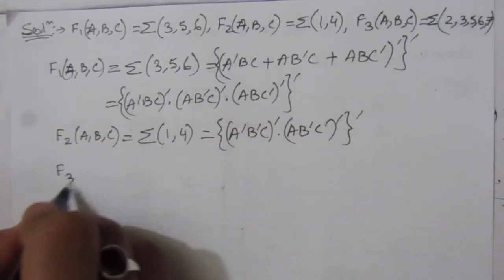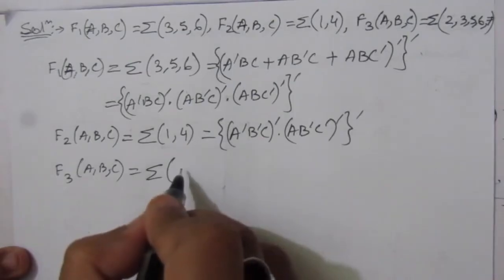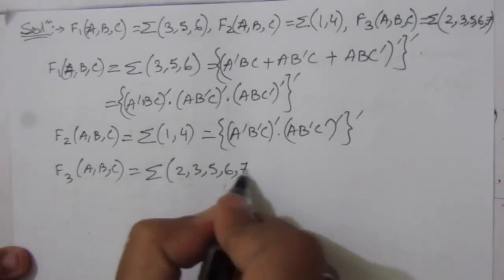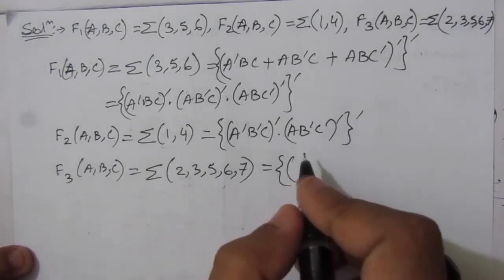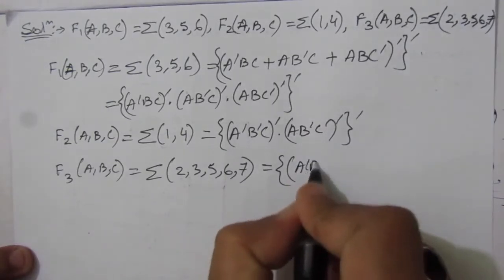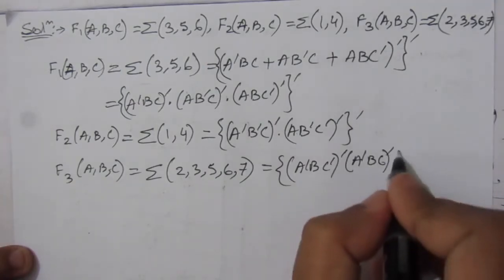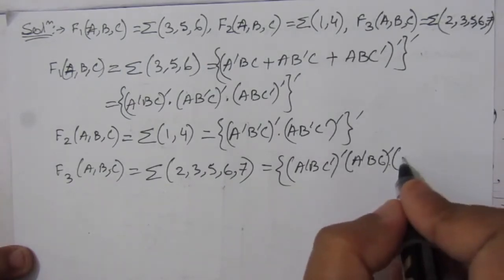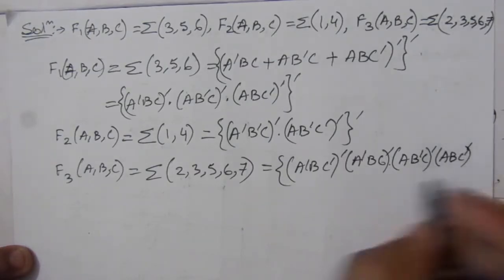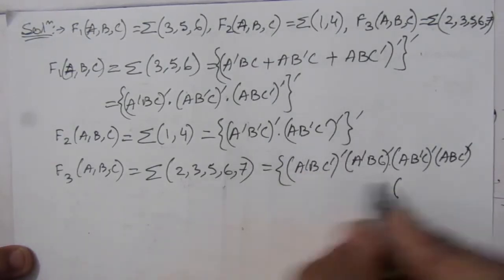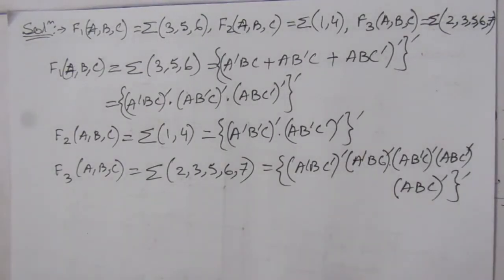For F3(A, B, C) = Σ(2, 3, 5, 6, 7), we write: minterm 2 = A̅BC̅ (010), minterm 3 = A̅BC (011), minterm 5 = AB̅C (101), minterm 6 = ABC̅ (110), and minterm 7 = ABC (111). Applying double complementation gives us the NAND expression for F3, with each minterm complemented and combined.